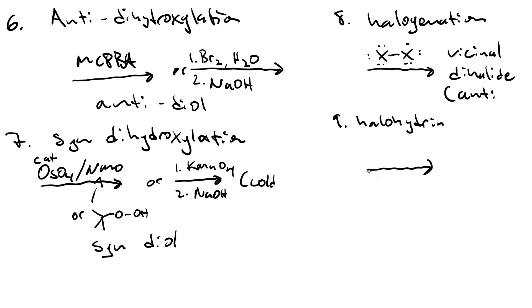To make a halohydrin, use a halogen molecule, same as with halogenation, but do it in water instead of carbon tetrachloride, and you get an alcohol and an alkyl halide. Also, we should say that the alcohol is Markovnikov, and the stereochemistry is anti.